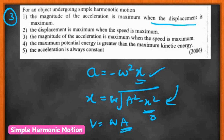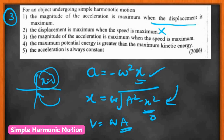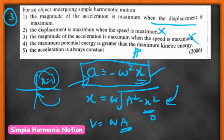When x = 0, speed is maximum (v = ωA) but acceleration is zero — so the statement that acceleration is maximum when speed is maximum is also wrong. The fourth statement says maximum potential energy is greater than maximum kinetic energy — by conservation of energy, maximum potential energy equals maximum kinetic energy, so that's wrong too. The fifth says acceleration is always constant — from the equation, acceleration varies with displacement, so that's also incorrect. If you know the equations, answering statement questions becomes very easy.